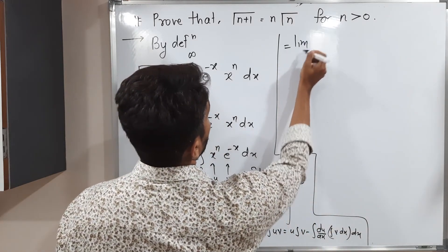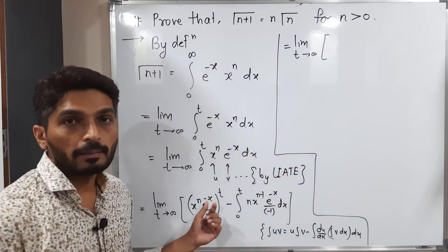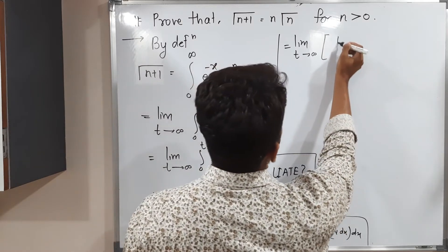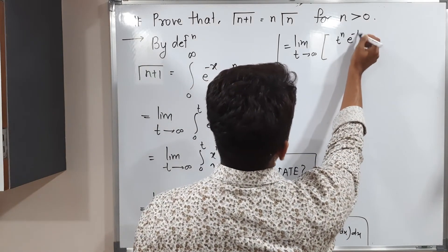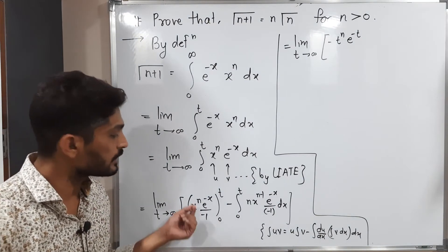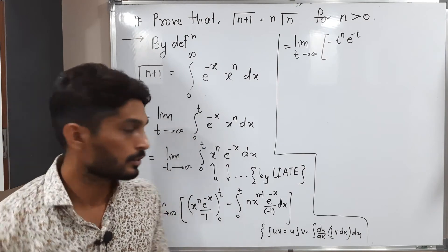Limit t tends to infinity. See, I am putting the upper limit, I am putting the lower limit. If I put t here, we will have t raised to n, e raised to minus t. Minus sign is there. But if I put 0, 0 raised to anything is 0, and 0 into anything is 0, so that's why we will have 0.